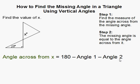How to find the missing angle in a triangle using vertical angles. In this problem we're asked to find angle x and these are givens down here.